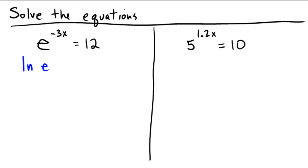So ln of e to the negative 3x is going to be equal to ln of 12. And ln and e cancel out. So we're left with negative 3x equals ln 12.